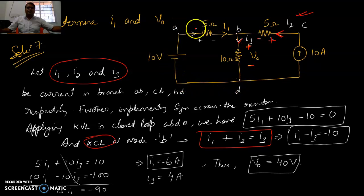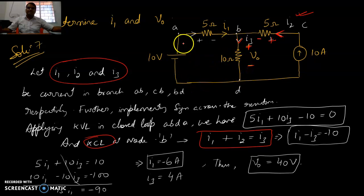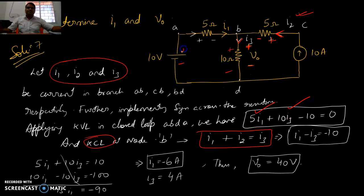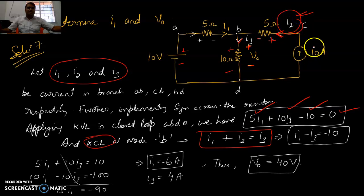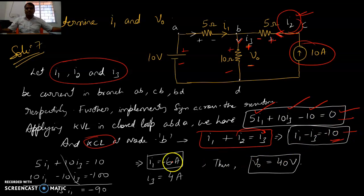Apply KVL along path A→B→D→A: you get plus 5i1, then 10i3, then minus 10, giving one equation. Also note i2 equals 10A from the current source side — so minus 10 and minus i3 appears. Solving the two equations gives V0 equals 40 volts and i1 equals minus 6 amperes.